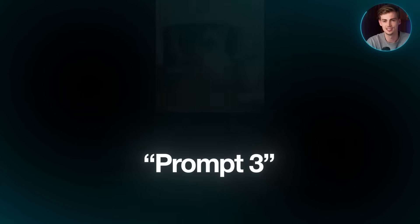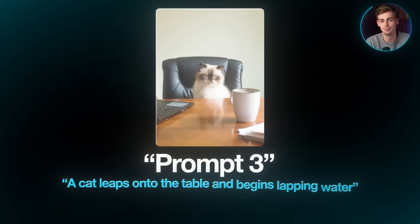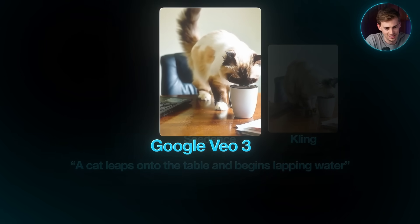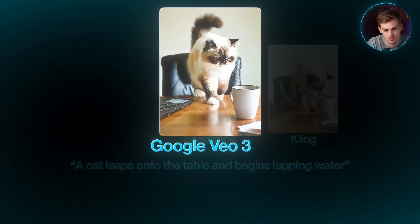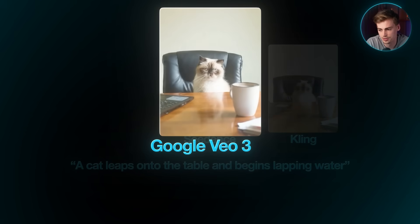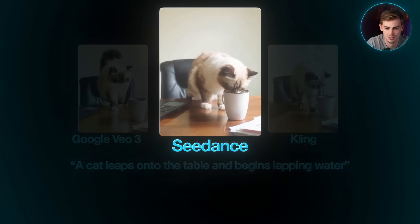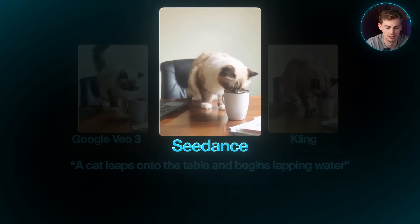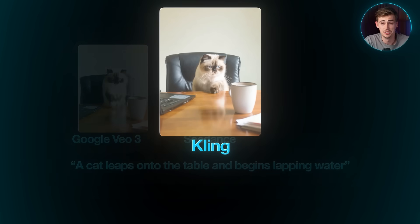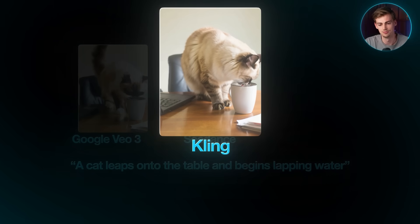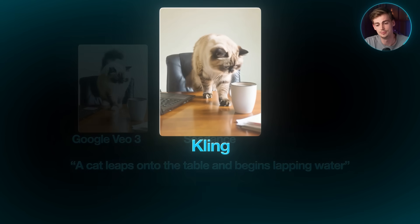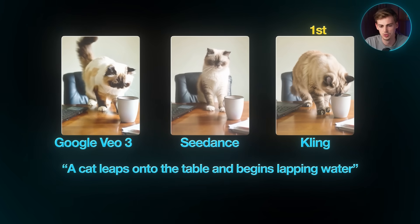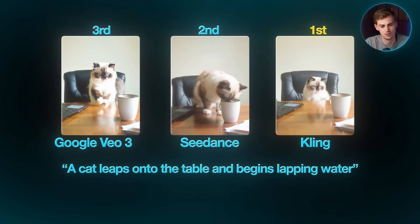Image-to-video three: a cat leaping onto a table and drinking water. Google VO3 looks quite good — the shadows on the chair are a bit strange but there's nice movement of the milk in the cup. Seedance's cat drinking is best but the leaping looks a bit strange; colors are accurate. Kling 2.1 looks the most natural — the cat is fully standing on the table, the leap onto the table looks good, and the way he aggressively drinks is convincing. Ranking: Kling first, Seedance second, Google VO3 third.